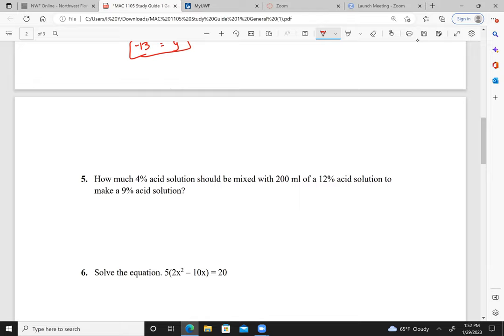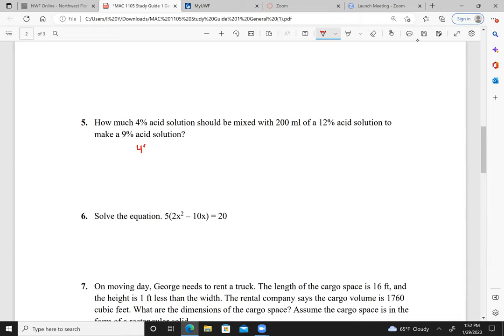Remember, if you have the time, check your answers. Okay, so we have our 4% solution, which is equivalent to 0.04. So how much 4% solution x should be mixed with 200 milliliters of 12% solution, equivalent to 0.12, to make a 9% solution. So if I add x to 200, I have 200 plus x milliliters of 9% solution.